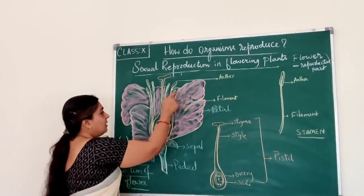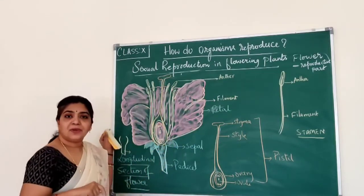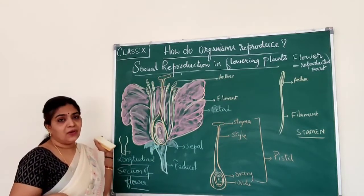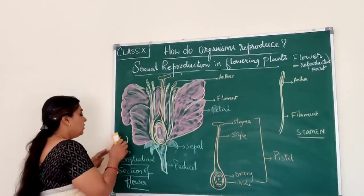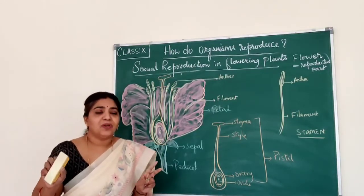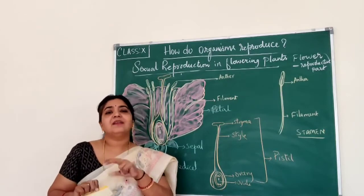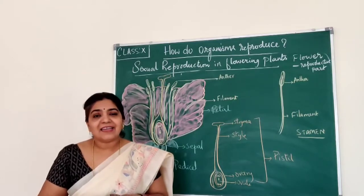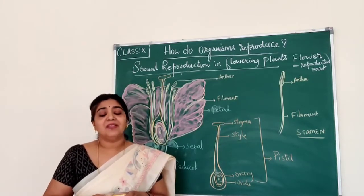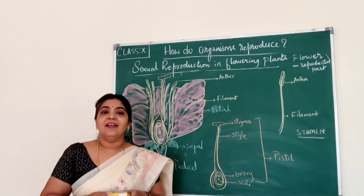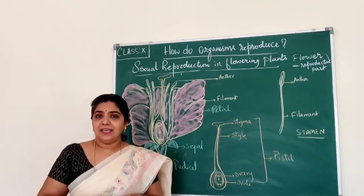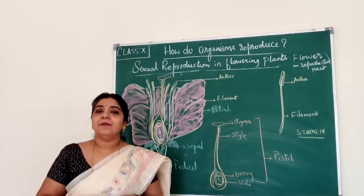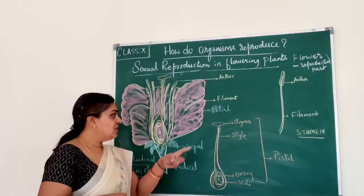Then we have this bright-coloured structure, which is nothing but the petals, otherwise called the corolla. What is the function of the petal? The petal also won't help in reproduction directly, but it serves an important function — it helps in attracting insects, because they are brightly coloured. Insects help in pollination.